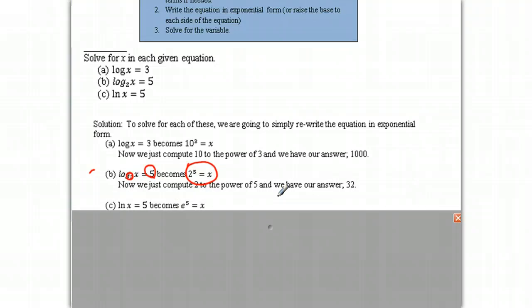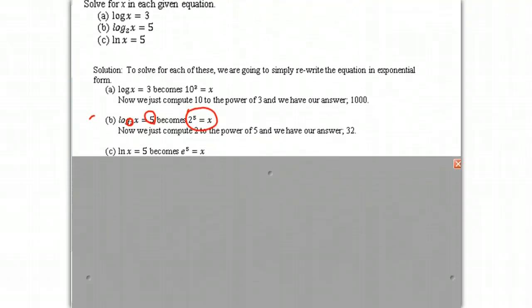Our next one says ln of x equals 5. Most of you know that when you have ln, it's base e. So it's really log base e of x equals 5. And that, by definition, means e to the 5th, so it's this base raised to that power, is equal to x. And there you have it.